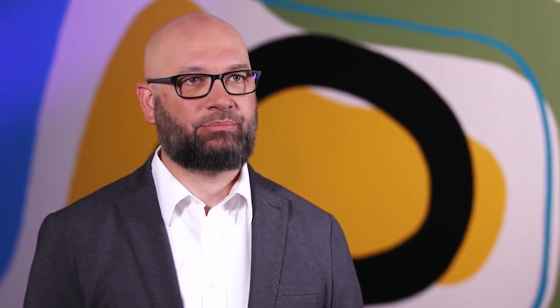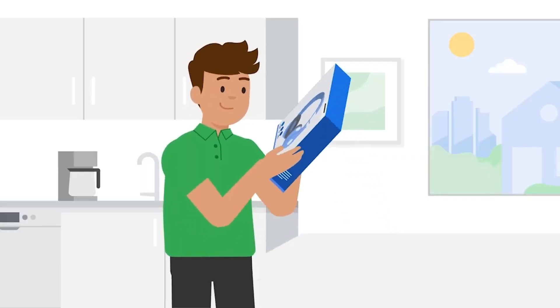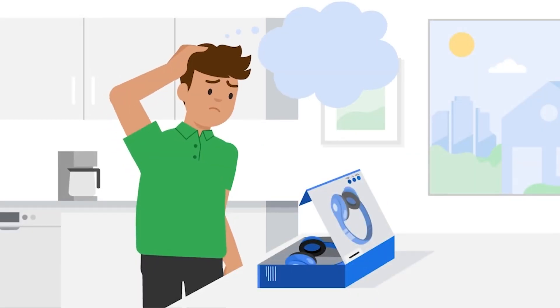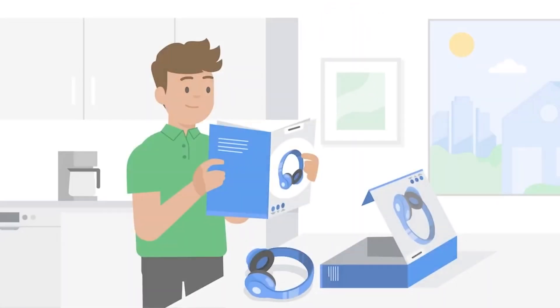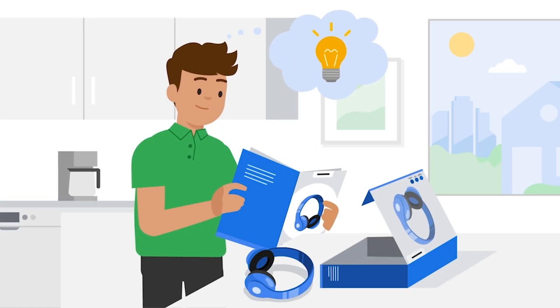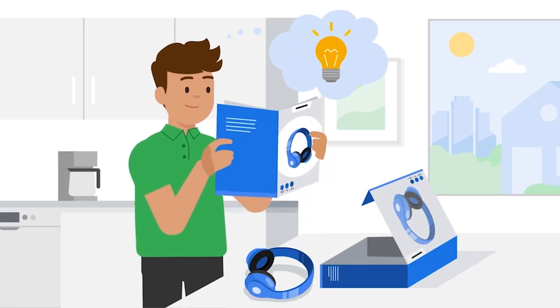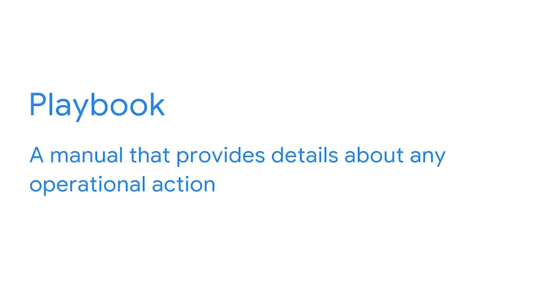They may add, remove, or even merge documentation types. Have you ever purchased a product and didn't know how to use it, and consulted the product manual for instructions on how to do something like turn it on? That's using documentation to solve an issue. Previously, you've learned about how playbooks keep business operations safe, and in incident response, playbooks work similar to a product manual. A playbook is a manual that provides details about any operational action.